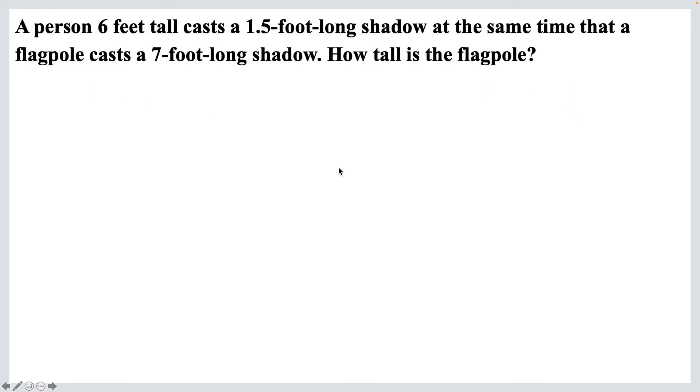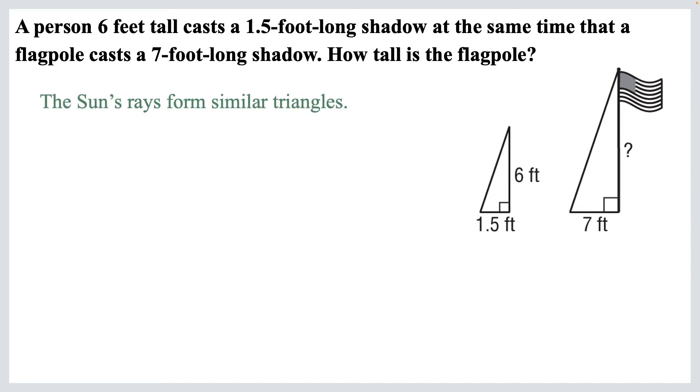Okay, one more. A person 6 feet tall casts a 1.5 foot long shadow at the same time that a flag pole casts a 7 foot long shadow. How tall is the flag pole? It's always helpful to draw a picture. Now, a fun fact for you is that the sun's rays actually form similar triangles. So we know these triangles are similar.